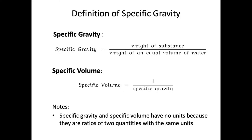The next important term in pharmacy is specific gravity. Specific gravity is equal to the weight of the substance divided by the weight of an equal volume of water. We standardize the volumes, so the difference in specific gravity is the ratio between the weight of the substance over the weight of an equal volume of water.